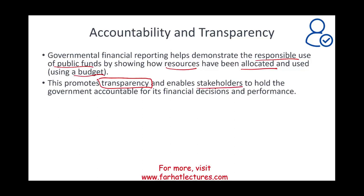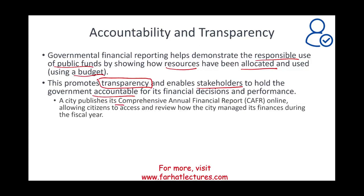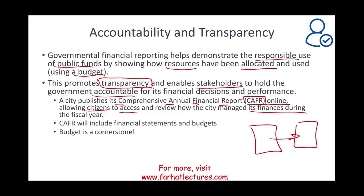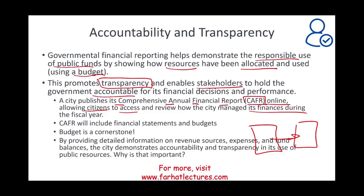The purpose is to enable stakeholders, usually citizens, to hold the government accountable for its financial decisions and performance. For example, when a city publishes its Comprehensive Annual Financial Report (CAFR), it allows citizens to access and review how the city managed its finances during the fiscal year. The CAFR includes financial statements and a budget — the budget being a cornerstone because it tells citizens the plan, showing revenues, expenses, and fund balances, demonstrating accountability and transparency in the use of public resources.